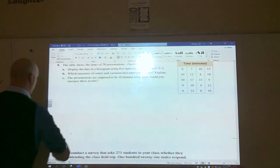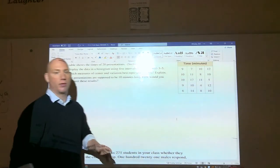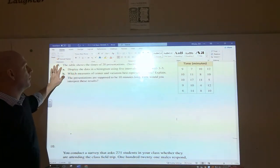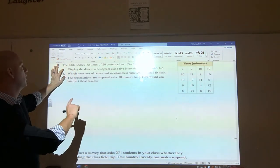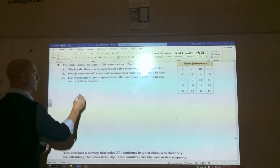Hey guys, we are going to now be going over number nine and I'm going to speed these up a little bit because this is really redundant what we've already been doing. The table shows 20 presentations, display the data in the histogram using five intervals. So the hardest part of the beginning is just getting your five intervals.